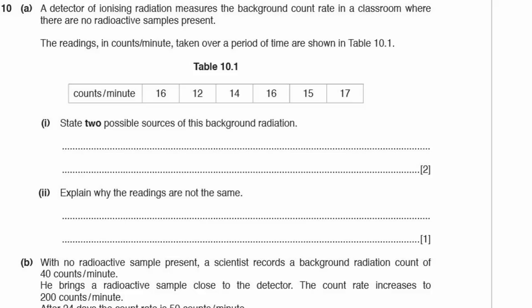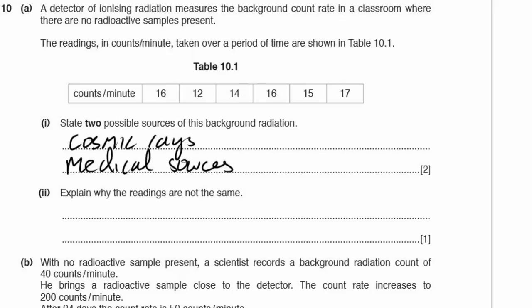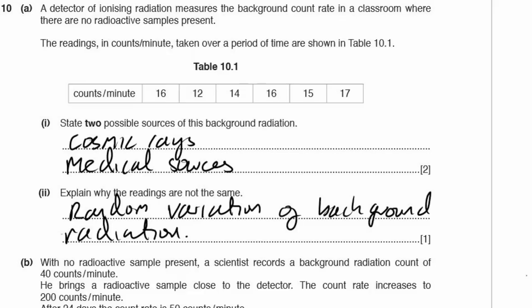Question 10. A detector measures background radiation in a classroom with no radioactive samples. Two possible sources of background radiation: cosmic rays from space, and medical sources. Rocks and radon gas are also valid answers. The readings vary because of the random nature of radioactive decay — there is random variation in background radiation.